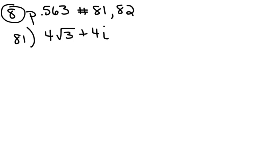In problem 8, page 563, numbers 81 and 82, we want to find the square roots of 4√3 plus 4i. In number 82, it's the same complex number but we're going to find the cube roots. For number 81, we're going to find the square roots, which means we're only going to find 2 answers.